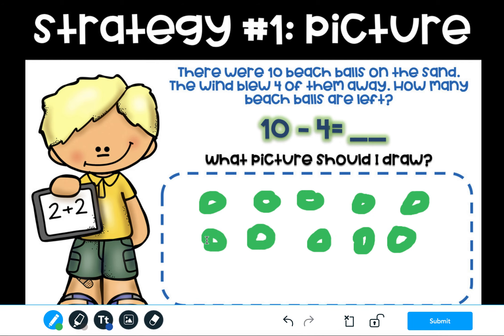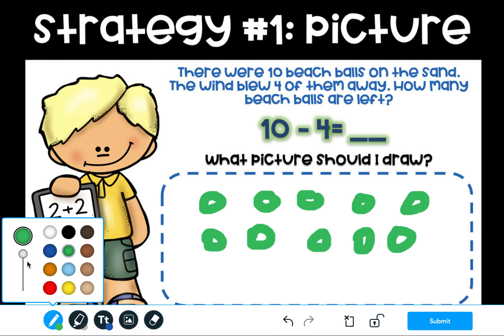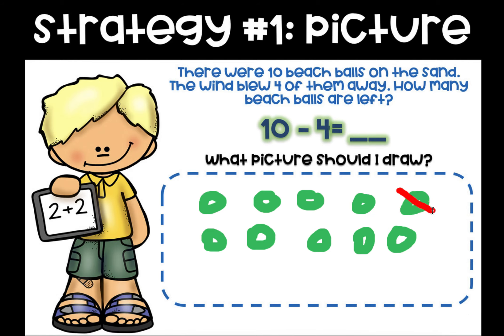Next, I'm going to remind myself what I'm taking away. When we subtract, you take something away. Here are my 10 beach balls, and 4 of them blew away. I'm going to change my color and cross out 4: 1, 2, 3, 4.